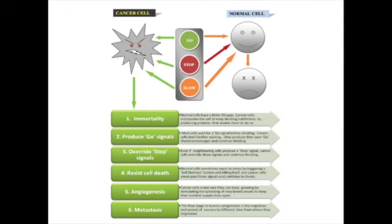This model looks at tumors as complex tissues, in which cancer cells recruit and use normal cells in order to enhance their own survival and proliferation. The six hallmarks of this currently accepted model can be described using a traffic light analogy: 1. Immortality — continuous cell division and limitless replication. 2. Produce go signals or growth factors from oncogenes. 3. Override stop signals — anti-growth signals from tumor suppressor genes. 4. Resistance to cell death or apoptosis. 5. Angiogenesis — the induction of new blood vessel growth. And 6. Metastasis — spread to other sites.